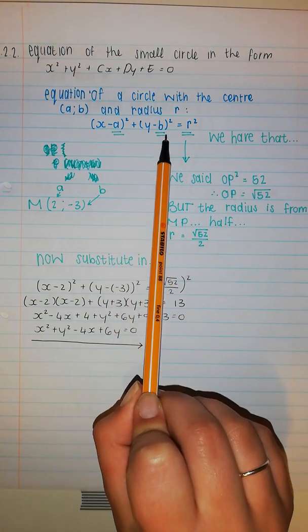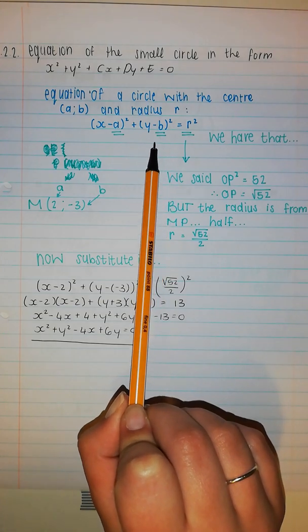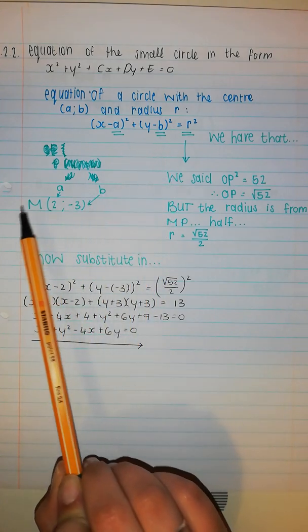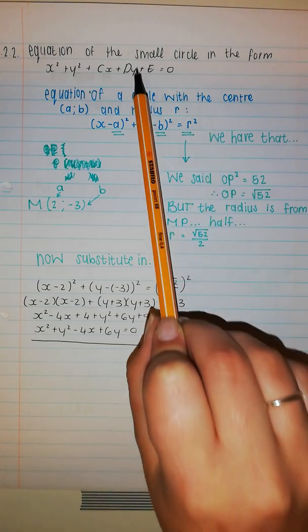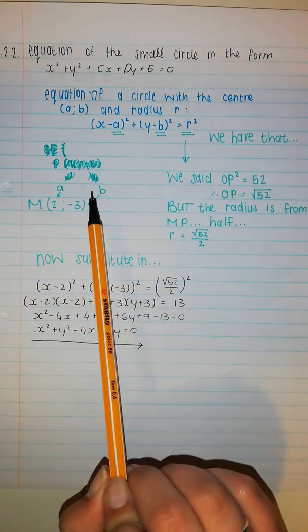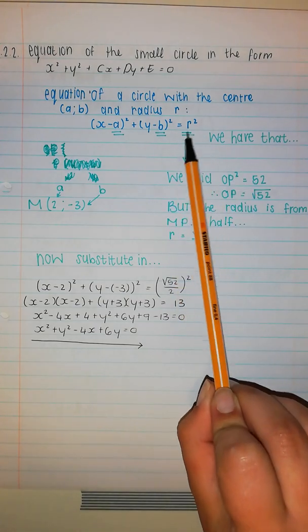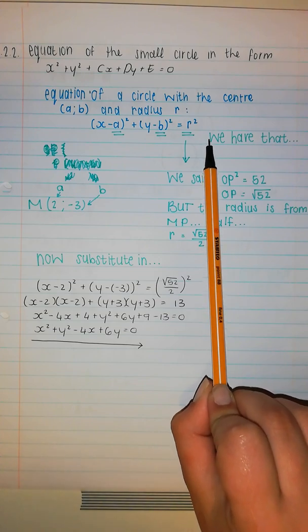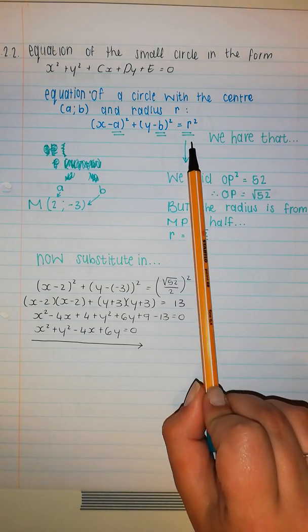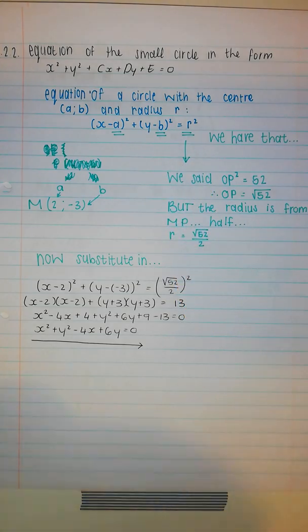So we have the a and we have the b and we're going to use M because that is a point. So we're going to use M. It's the small circle center. And we have the radius and we got the radius in the previous question on the bigger circle.